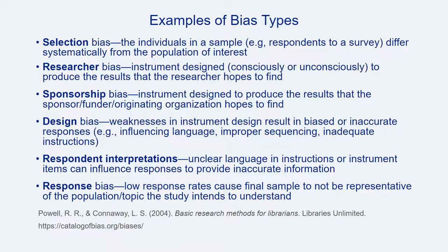Design bias and bias introduced by respondent interpretations are both generated by weaknesses in instrument design, instruction, use of terms, and so on. Response bias occurs when low response rates cause the final sample to fall short of being representative of the intended population. These are just a few biases that can impact attainment of valid and usable survey results. Being familiar with these biases is one solid step toward preventing them. When library assessment practitioners know better, they do better — a strong foundation in understanding research biases is one of the many areas where knowing more can make an enormous difference in the final outcome of an assessment project.